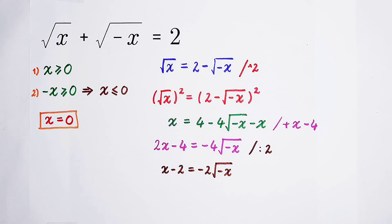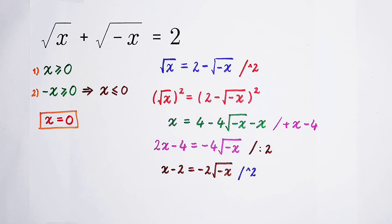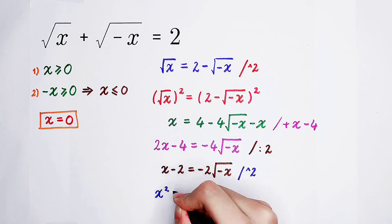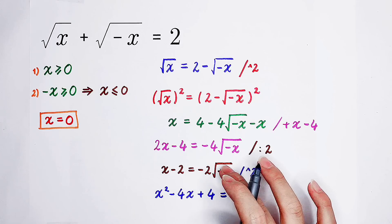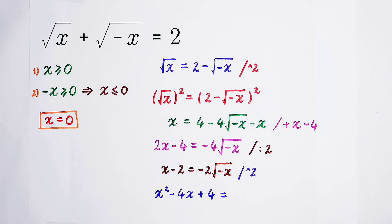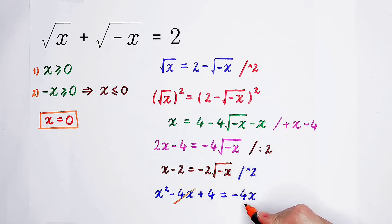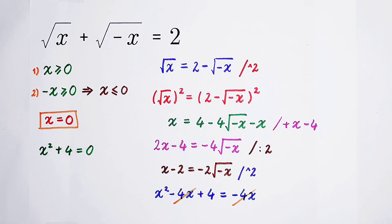But we still have a square root, so we need to remove it. We square both sides again. On the left: (x minus 2) squared equals x squared minus 4x plus 4. On the right: negative 2 squared is 4, and the square root of negative x all squared is negative x, giving negative 4x. We can see that negative 4x appears on both sides, so we cancel it. What's left is x squared plus 4 equals 0.